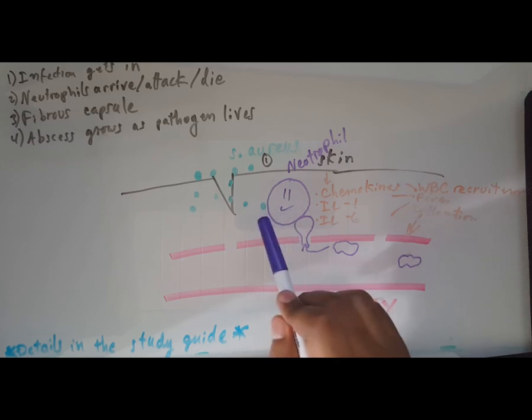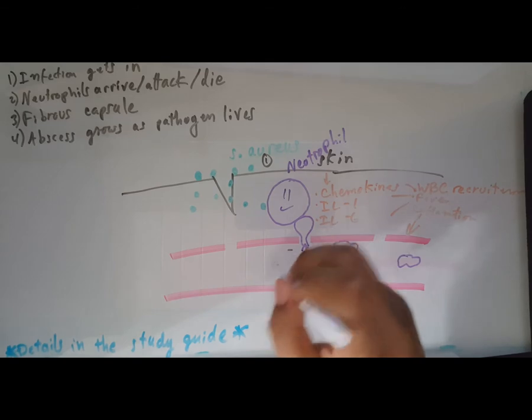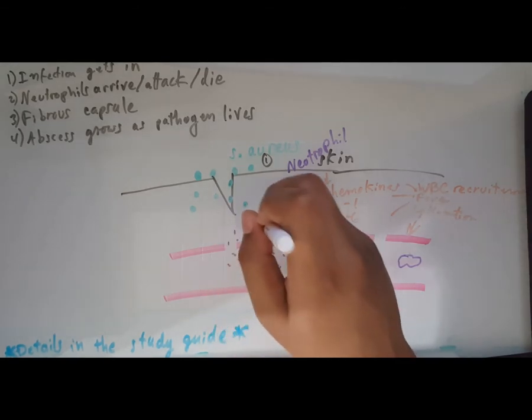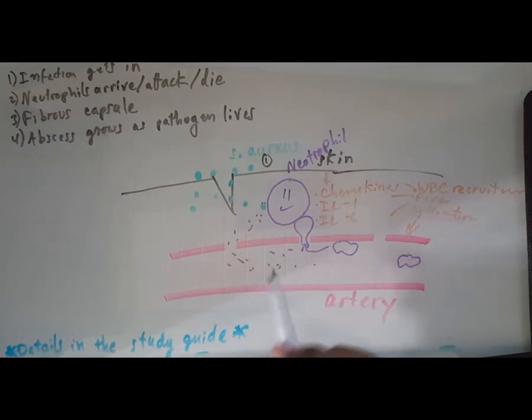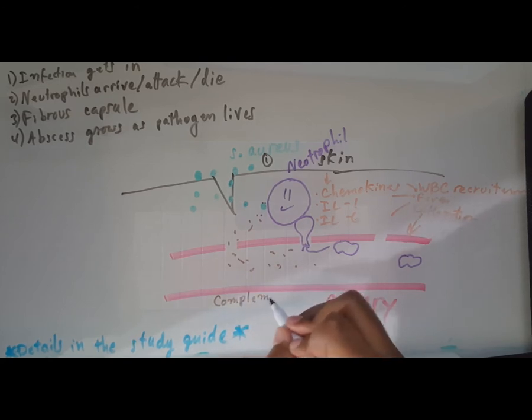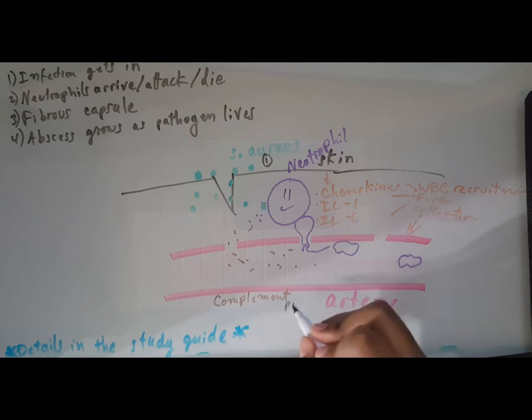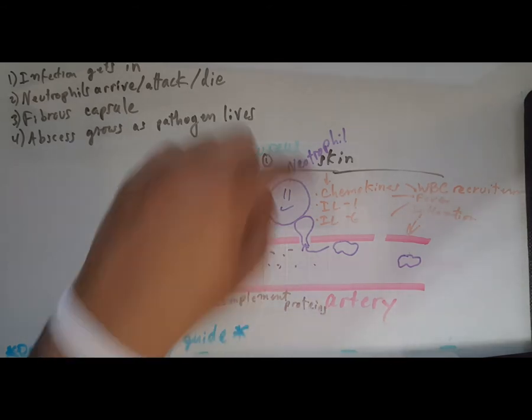But he can't eat him because the neutrophil needs a little help. We have molecules that will come out from the blood and attach to the staph aureus. These molecules - these little brown ones - are complement proteins.